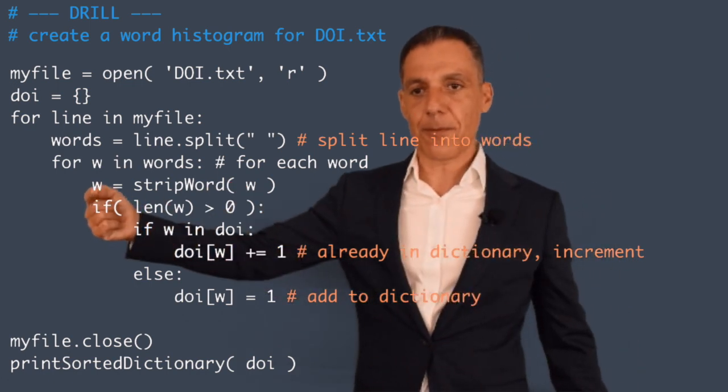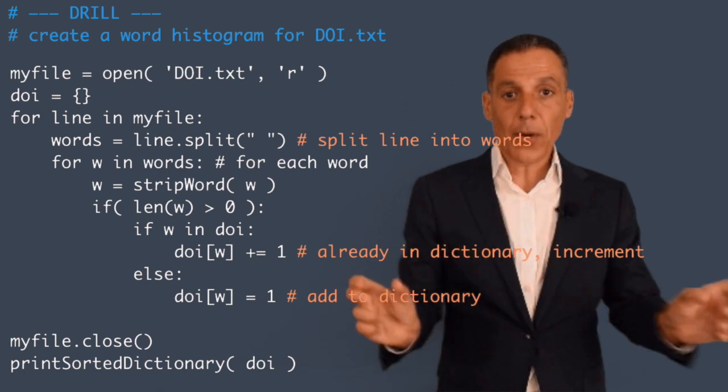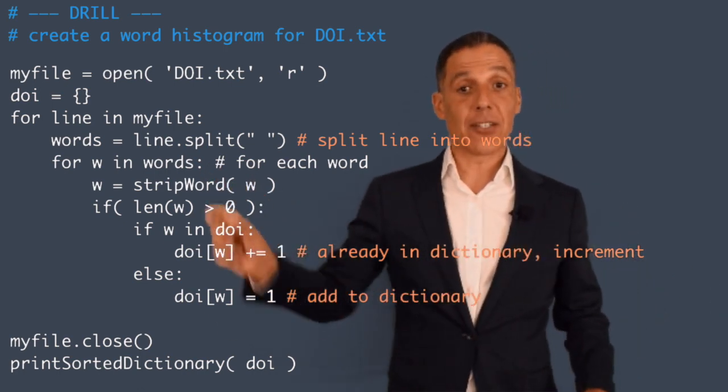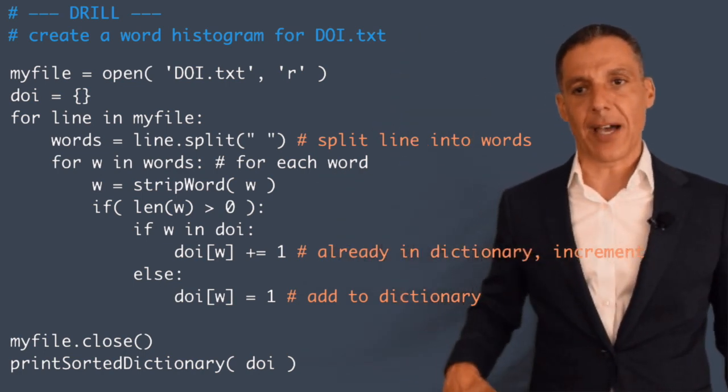So at this point in the for loop, I've gotten one line of text. I've gotten one word, and now I've got to do a little bit of work. And I'm going to do that over and over and over again for every word in the line and for every line in the file.